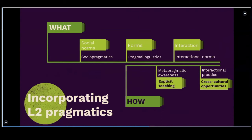Another area is pragmalinguistics — the appropriate linguistic forms. Although we can make a request in English by saying 'open the window,' we can also say 'can you open the window?', 'could you open the window?', 'would you mind opening the window?', or 'would you be so kind as to open the window?' All of those are linguistic forms that should be used in a certain context with certain interlocutors. And it's also important to know the interactional norms of speech. In some languages, the pause between two speakers is really short, like in Spanish, but in English people pause a lot longer when they interact. We need to know all those small conversational norms if we want our students to be appropriate when they interact with other speakers.